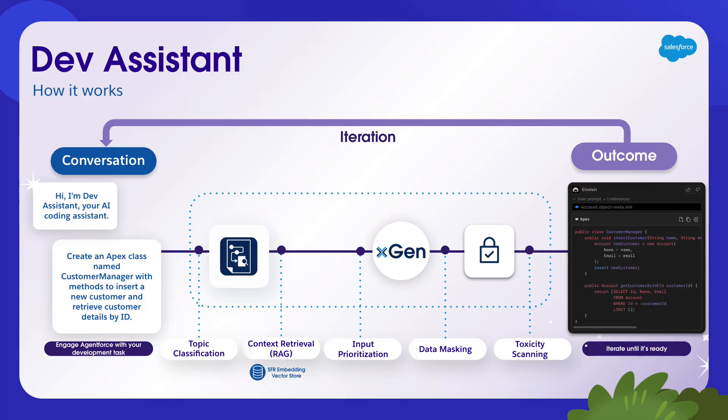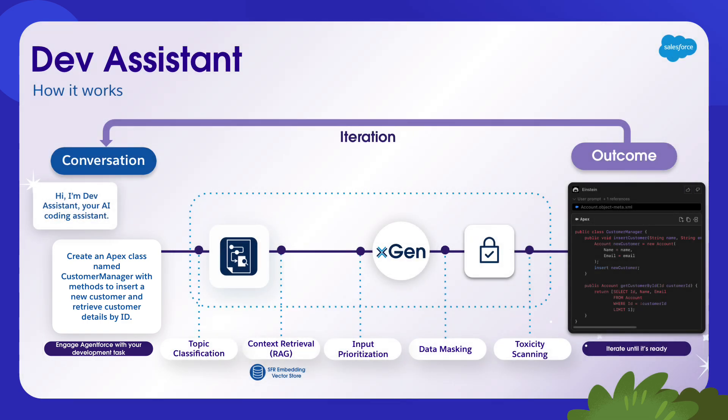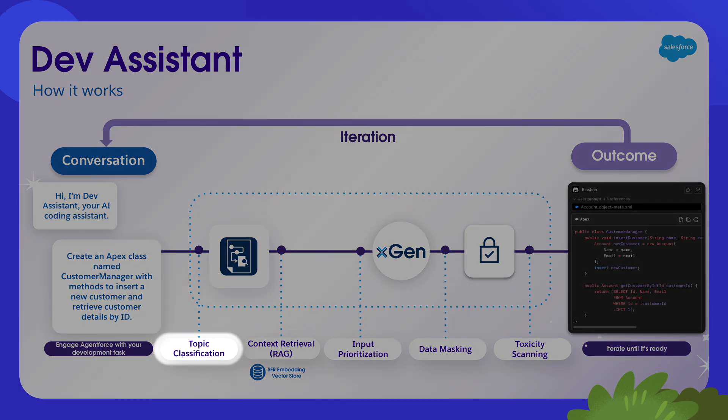Your Dev Assistant conversation begins with your prompt. For example, you can request to create an Apex class. From there, Dev Assistant goes through several steps. First, it does topic classification. This helps Dev Assistant ensure that it is not responding to inappropriate requests and prevents the generation of harmful content. Next, we run the context retrieval process, powered by retrieval augmented generation, or RAG.